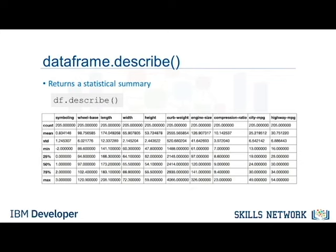Now we would like to check the statistical summary of each column to learn about the distribution of data in each column. The statistical metrics can tell the data scientist if there are mathematical issues that may exist, such as extreme outliers and large deviations. The data scientist may have to address these issues later. To get the quick statistics, we use the describe method. It returns the number of terms in the column as count, average column value as mean, column standard deviation as STD, the maximum and minimum values, as well as the boundary of each of the quartiles. By default, the DataFrame.describe function skips rows and columns that do not contain numbers.